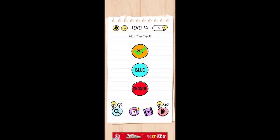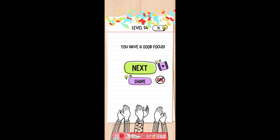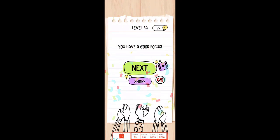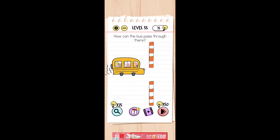How can the bus pass through there? As you can see, it's a small way to pass through. Just make the bus smaller and then the bus can pass through.